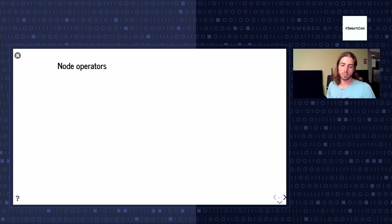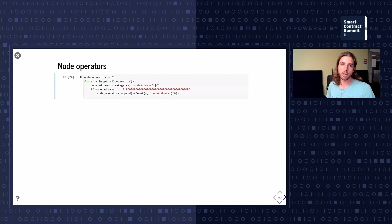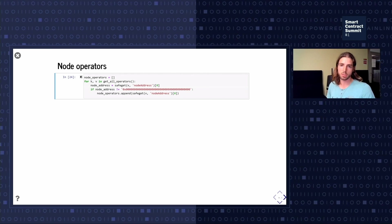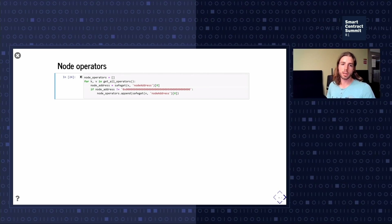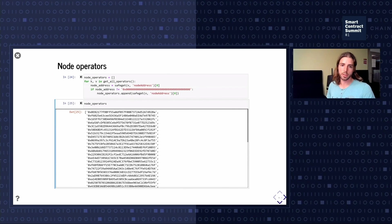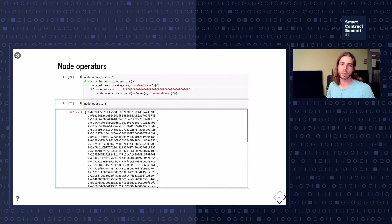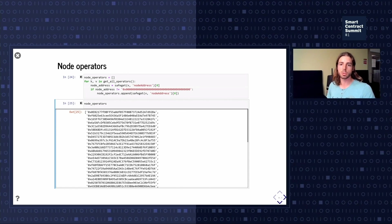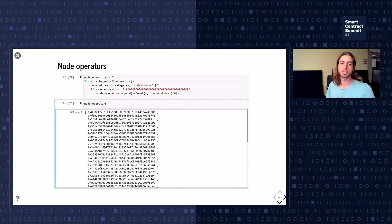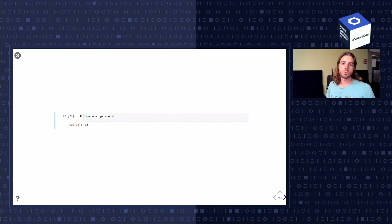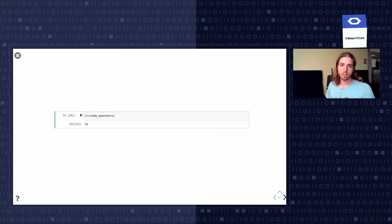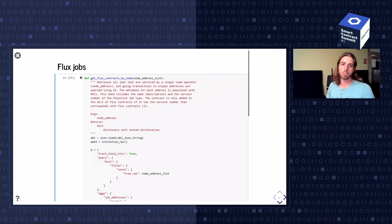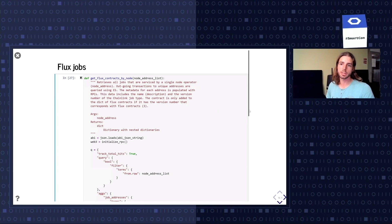There are quite a few node operators, so we're going to be fetching them from a central JSON file. This is the only data I've prepared beforehand - the rest we're going to get directly from the chain. We have 52 node operators here that we're working with, fetched using this ElasticSearch query.